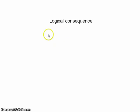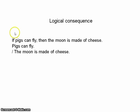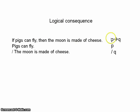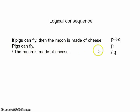Let's take a very simple argument such as: if pigs can fly, then the moon is made of cheese; pigs can fly; therefore the moon is made of cheese. Obviously this argument is complete nonsense, but equally obviously it's got something right - its form. It's of the form modus ponens: if P then Q, P therefore Q. It's quite clear that given these premises, if these premises were true, then the conclusion would follow. The conclusion is a consequence of these premises.